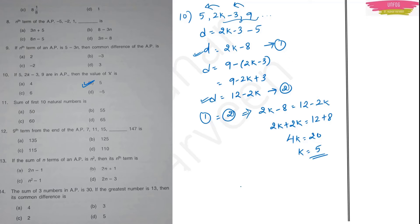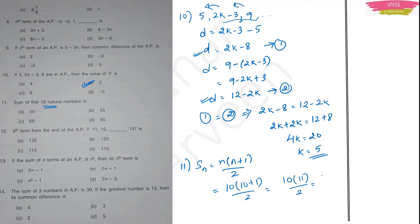Question 11: Find the sum of the first 10 natural numbers. Use the direct formula Sn = n(n+1)/2. Substituting n = 10: 10 × 11 / 2 = 110/2 = 55. Option B is the right answer.